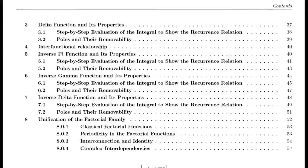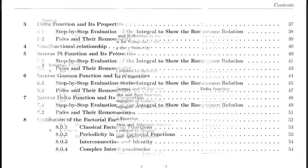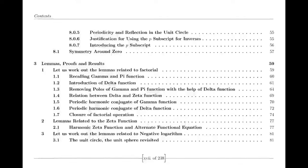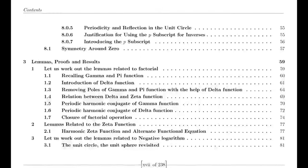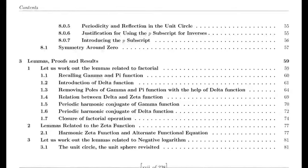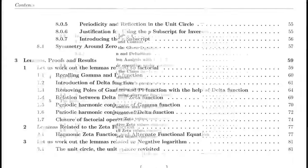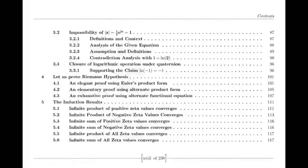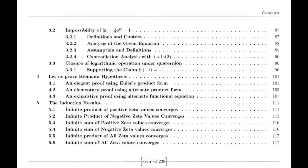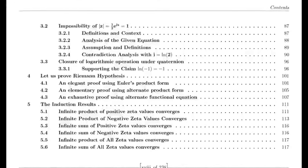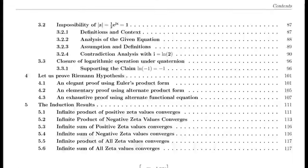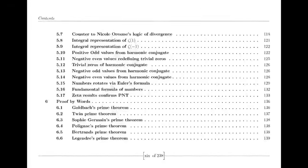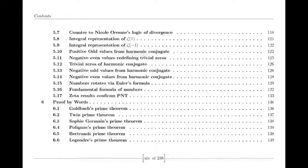As the century progressed, the zeta function found its way into various fields beyond pure mathematics — physics, probability theory, and even quantum mechanics. Its complex interplay with randomness and order sparked new insights and debates among scholars, revealing that the quest to understand prime numbers was not merely an academic pursuit but a journey into the very foundations of the universe.